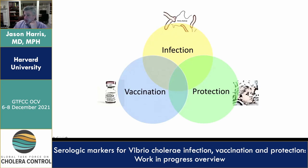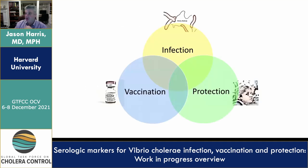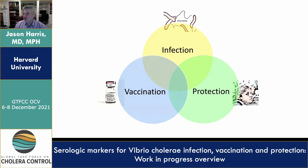When one thinks about the uses of different antibodies, they can help us understand the relationship between the host and pathogen in the infection, but also serve as very practical markers of either vaccination, infection, or protection. These markers may overlap — you could have a marker seen after both infection and vaccination that is also associated with protection — or they may not overlap, as shown in this Venn diagram.